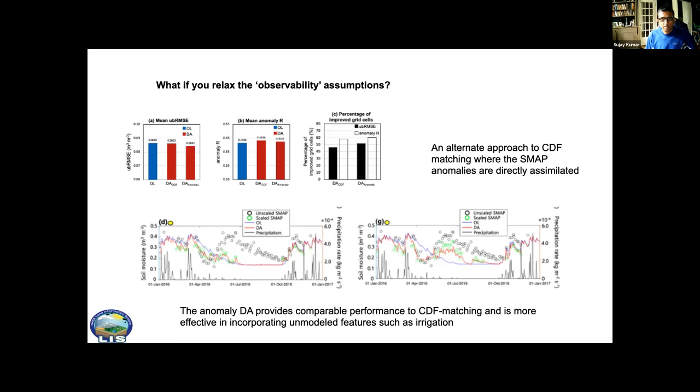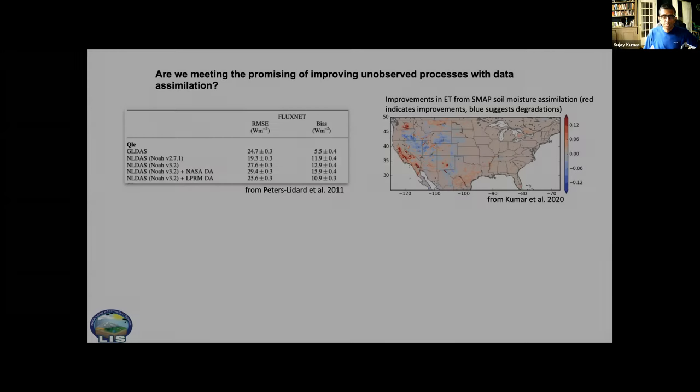The bars basically show that the anomaly approach gives you about the same skill as when you use a more detailed bias correction like CDF matching. On the other hand, at locations where management signals are present like in California where there's a lot of irrigation, when you use CDF matching the assimilation doesn't really give you a meaningful change. But when you do anomaly assimilation it actually does better. This illustrates that if you reduce some of these biases in your retrievals we can actually take more advantage of the information present in your retrievals through data assimilation systems.